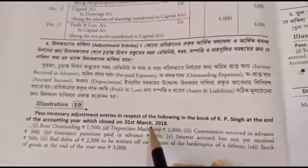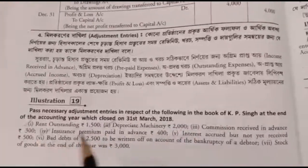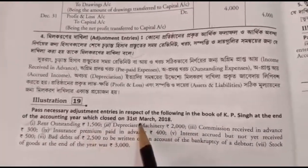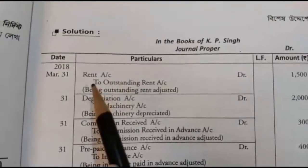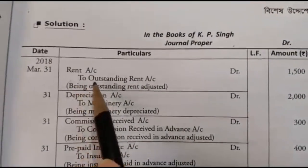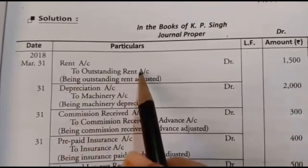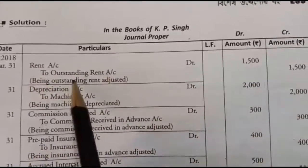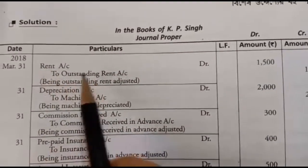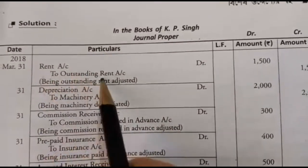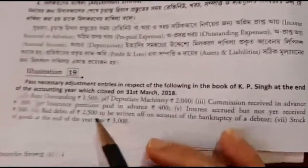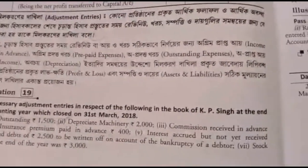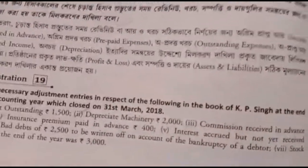This is a total adjustment. You can adjust the rent to cash, but when the rent outstanding is $1,000, you adjust the liability to the outstanding rent account — that is the adjustment entry. You can also adjust the depreciation of machinery, which is $2,000.